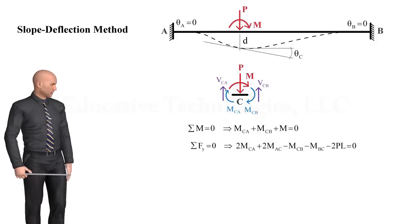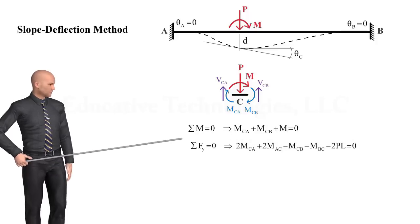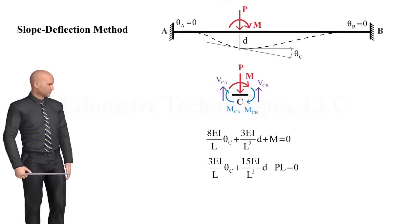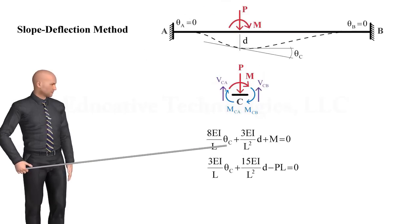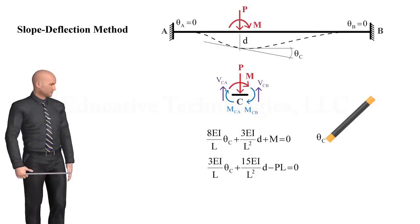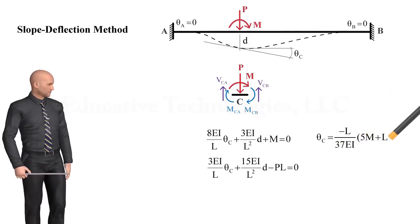If we substitute the slope-deflection equations in these equations, we get the equilibrium equations in terms of two unknowns, D and theta C. Solving these equations for the unknowns, we get...